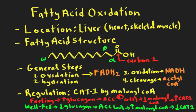If we look at the four steps, we start with an oxidation of the beta carbon, and that oxidation process generates an FADH2 molecule. We then generate a double bond, hydrate the double bond, do another oxidation generating an NADH, and then a final thiolytic cleavage releasing an acetyl-CoA molecule. That's the general idea about what you're doing with the fatty acid oxidation reactions.